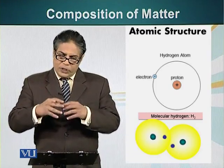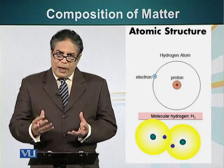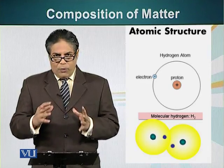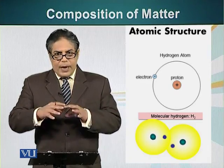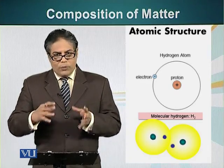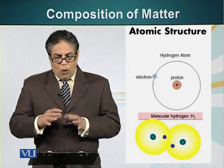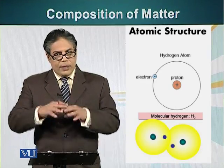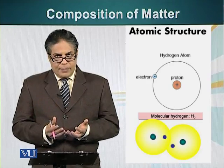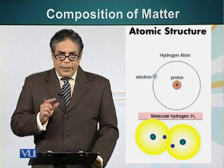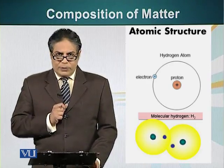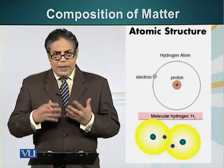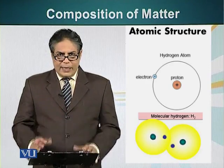The electron revolving around this positively charged particle has to follow certain rules. It has to follow the rules of an orbital. An orbital is basically the space around the nucleus. Orbitals like to have two electrons. To understand this concept, let's look at an analogy.